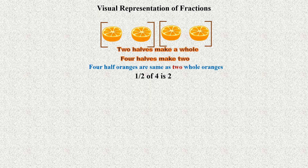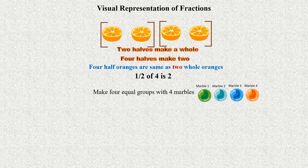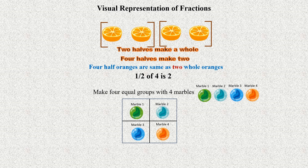Now take 4 marbles and make 4 groups. Divide a square into 4 equal parts and place the marbles. Count the marbles in each group — it is very clear that in each group there is only one marble. So mathematically, 1/4 of 4 marbles is 1 marble.